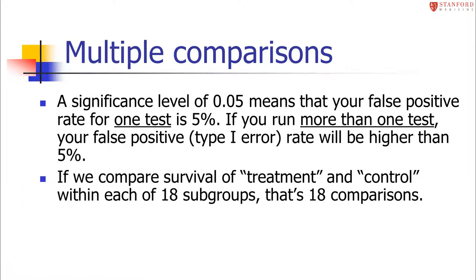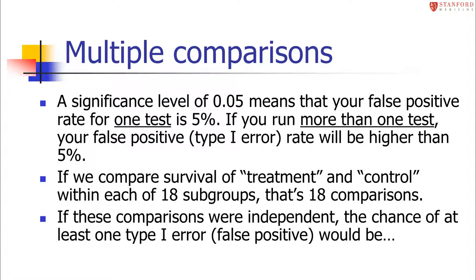If we compare survival of treatment and control within 18 different subgroups, that's 18 comparisons. To calculate the chance of at least one false positive, we use one minus the probability of none. The probability for one test of not getting a false positive is 95%, so for 18 tests that's 0.95 raised to the 18th power.